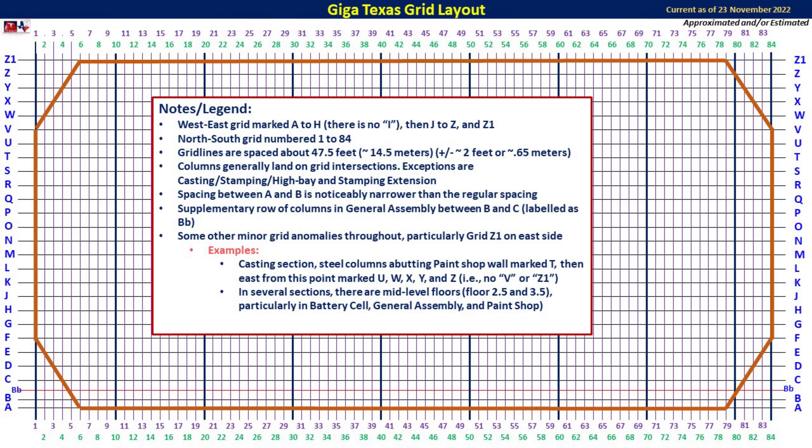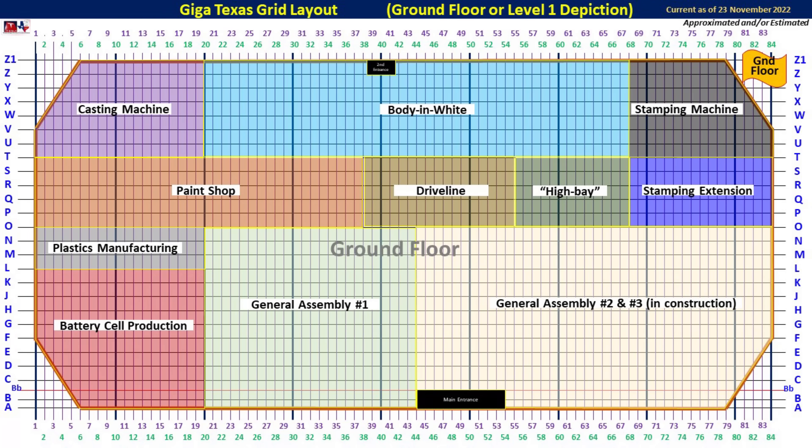To wrap up the grid overview: it is a grid pattern listed A through Z from west to east, and 1 through 84 from north to south. Generally, columns line up on each of the intersections. The sections that make squares from the four columns at the grid points are about 47 and a half feet or about 14 and a half meters, give or take. There are some discontinuities with the grid, and also some discontinuities of how the floors are constructed and labeled. Now let's turn our attention to each of the floors and how they are arranged.